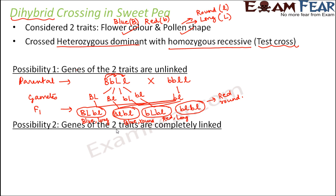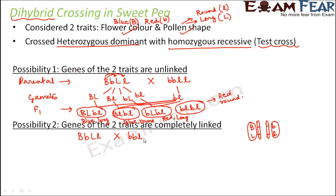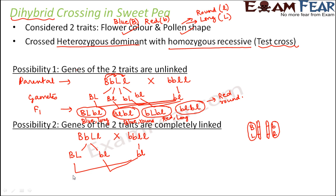In possibility 2, we assume the genes are completely linked — B and L are always together on the same chromosome, and b and l are always together. In that case, only two gametes are produced: BL and bl. The cross yields only two offspring types: BbLl (blue long) and bbll (red round), both of which are parental types. There are no recombinants at all.